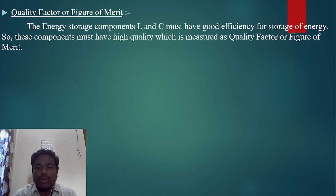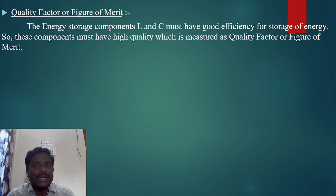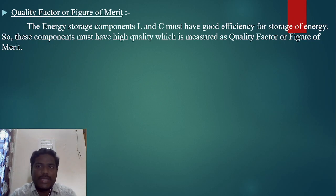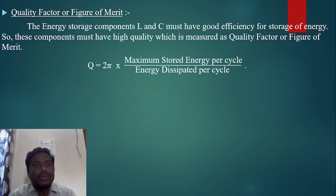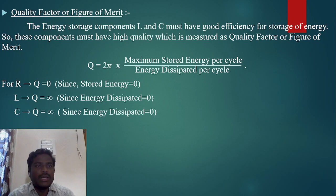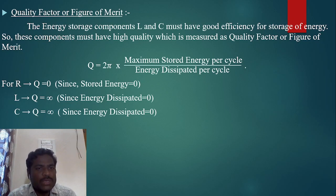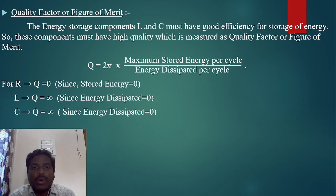The quality factor is also called the figure of merit. The energy-storing components L and C must have good efficiency for storage of energy, and the quality of this storage is measured as the quality factor. We define Q as equal to 2π times the maximum energy stored per cycle divided by energy dissipated per cycle. For resistance R, it is an energy-dissipating element, not energy-storing. For ideal inductors and capacitors, energy dissipation equals zero — they are purely energy-storing elements.